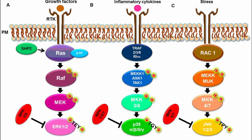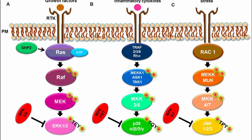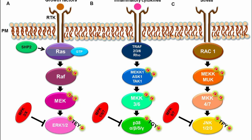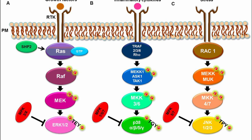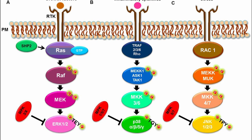A kinase is a type of enzyme that catalyzes the transfer of a phosphate group from a donor molecule, usually ATP or adenosine triphosphate, to a specific substrate molecule. This phosphorylation event can regulate the activity, function or localization of the target substrate, thereby influencing various cellular processes.